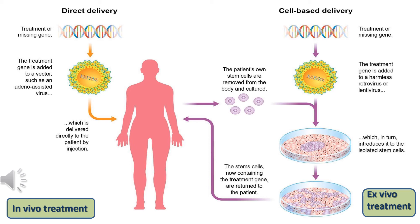Ex vivo treatment is when the target cells are taken outside the natural system, outside the organism. We take out the patient's stem cells — which are pluripotent, undifferentiated cells with the ability to differentiate into different types of cells — from the bone marrow. We prepare a culture, and use a vector such as retrovirus, lentivirus, or a non-viral vector. These vectors affect the stem cells in culture, and once the genomic material is inside the stem cells, the modified stem cells are reinserted into the organism where we want the gene expression to be observed.